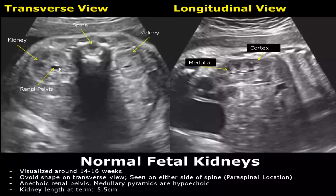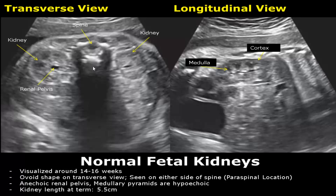Fetal kidneys can be visualized around 14 to 16 weeks. They have an ovoid shape on transverse view and are seen on either side of the spine. Here is the spine with shadowing. This anechoic area is the renal pelvis — it is due to urine. And these hypoechoic areas are the medullary pyramids.